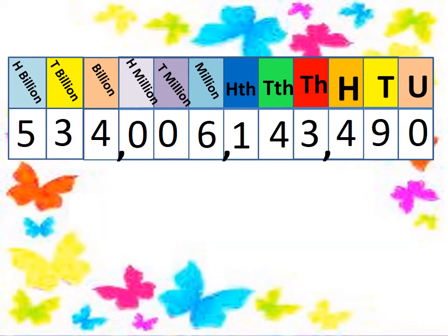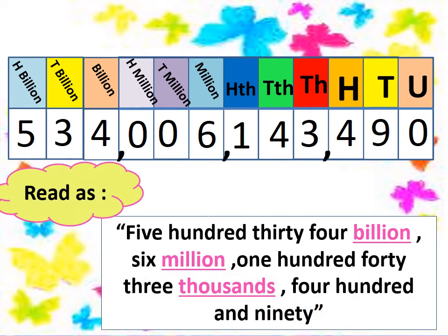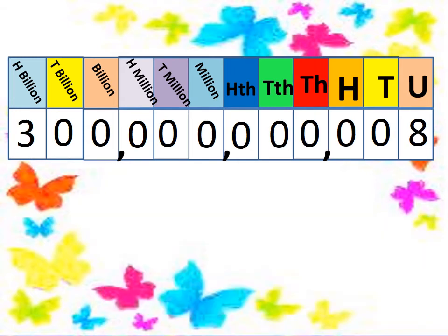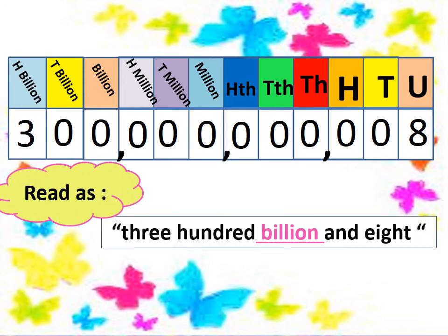Can we read this number? Yes — we start from the left: five hundred thirty-four billion, six million, one hundred forty-three thousand, four hundred and ninety. Another one: three hundred billion and eight, because eight is in the units place.